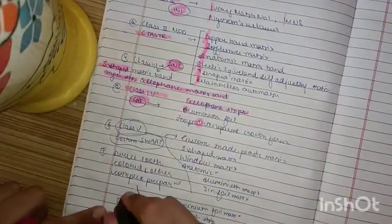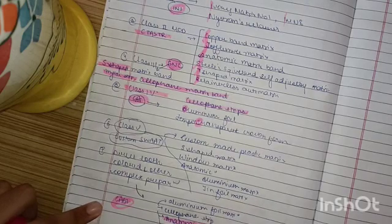Now, in 5th one and the 7th one, it is same, just there is an addition of one, which is the anatomic matrix.